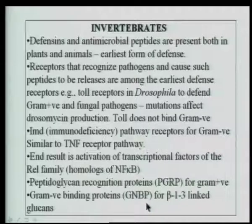When an infection occurs, these proteins can bind to bacterial proteins and agglutinate or precipitate them, keep them in one place, make a cyst around them and enclose them, so that they do not go on causing infection within the insect or within the hemolymph.